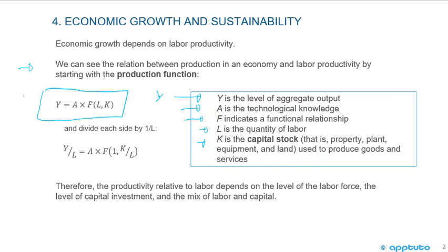So we've seen the production function before. Now what we're going to do is divide each side by L. So you can see Y divided by L equals A times F to the one, because L divided by L equals one, comma K divided by L. Therefore, the productivity relative to labor depends on the level of the labor force, the level of capital investment, and the mix of labor and capital.